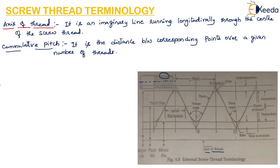This measurement can best be considered as the axial distance between two planes which are normal to the axis and pass through two points. Lead is the axial distance moved by the threaded part when it is given one complete revolution about its axis with respect to a fixed mating thread.